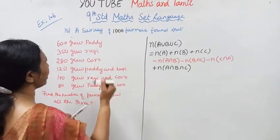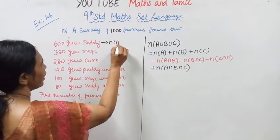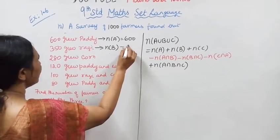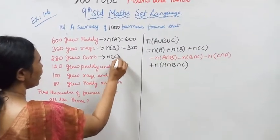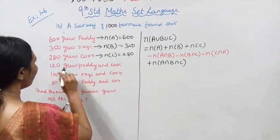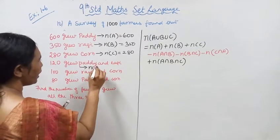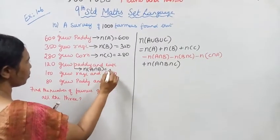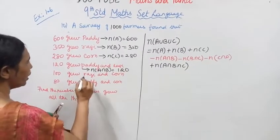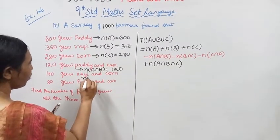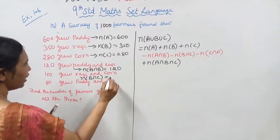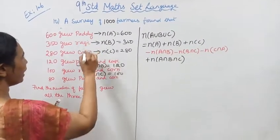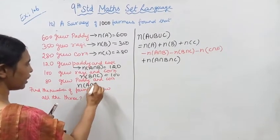Now substituting the values: N(A) = 600, N(B) = 350, N(C) = 280. Paddy and ragi: N(A∩B) = 120. Ragi and corn: N(B∩C) = 100. Paddy and corn: N(A∩C) = 80.